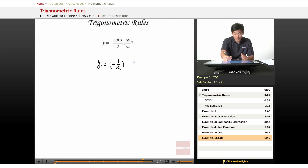negative 1 half times cotangent of x. So dy dx equals negative 1 half times negative cosecant squared of x, just by trig derivative rule. So we have a positive 1 half cosecant squared x.